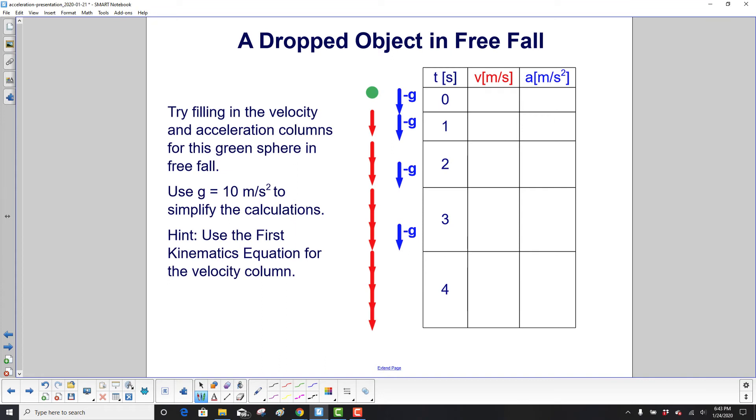Try filling in the velocity and acceleration columns for this green sphere in free fall. Here's the sphere, and these arrows are indicating that the velocity is increasing with every second. Please use g equal 10 meters per second squared to simplify the calculations. And hint, use the first kinematics equation for the velocity column.